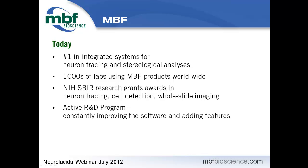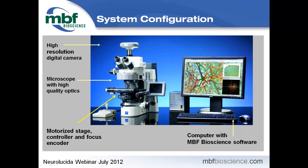We'll be concentrating mainly on the program Neuralucida today. A typical system for reconstructing and tracing neurons consists of a modern research microscope with a digital camera on top to bring the image to the screen. For today's demonstration, we've captured images — both single images and image stacks — and will demonstrate the program's capabilities on those images. A motorized stage is present, and a Z-meter keeps track of Z-position, allowing three-dimensional data collection.